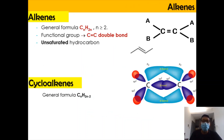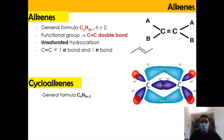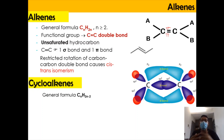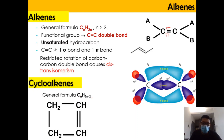Alkene has a general formula of CnH2n and a functional group of C=C double bond. It is an unsaturated hydrocarbon consisting of one sigma bond and one pi bond. Due to restricted rotation around the carbon-carbon double bond, it can produce cis and trans isomerism as learned in Chapter 4. For cycloalkene, the general formula is CnH2n-2, differing from alkene by a negative 2.